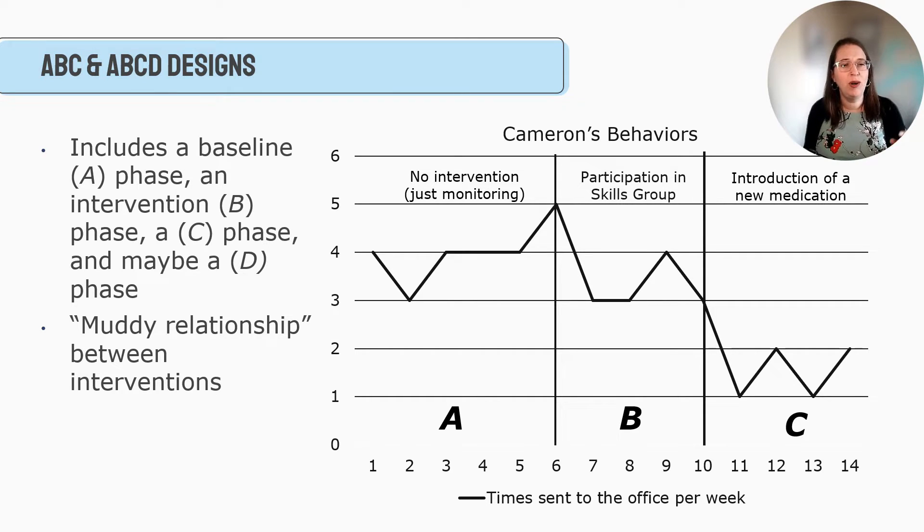So we say, you know what? Maybe the skills group isn't helping. Let's try a new medication. Maybe there's some untreated ADHD and some impulsivity. That's the issue. Then we track that. And we say, wow, look, he got a new medication and his number of instances going to the office dropped pretty significantly. Now, this is a little bit challenging because it creates a muddy relationship between the interventions. What if he learned just enough skills in the skills group that when combined with the medication was able to help him? We can't necessarily say, oh, it was only the medication. We might have to say, was it the group participation? Was it the medication? Or is it the combination?